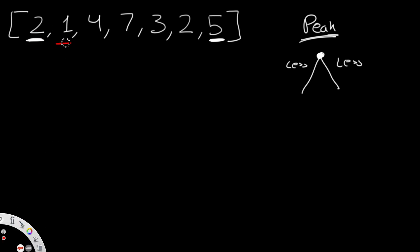Starting at value 1 (index 1): is it a peak? It needs to be greater than both neighbors 2 and 4 — it's not, so it's not a valid peak. At value 4: it's greater than 1 but less than 7, so not a valid peak. At value 7: 7 is greater than 4 and greater than 3 — so 7 is a valid peak candidate.